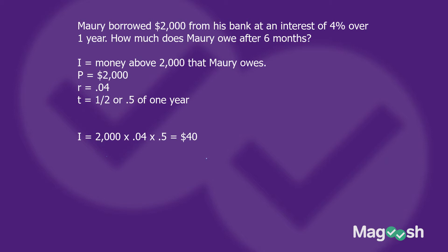It's always important to add the original amount once you've found the interest. If the question asked specifically for the interest, then of course you would just put $40.